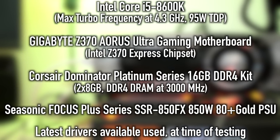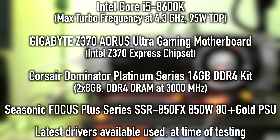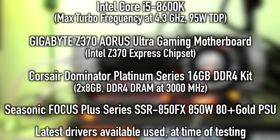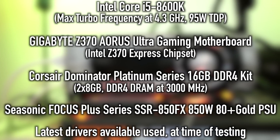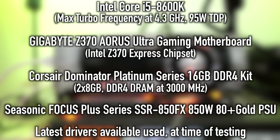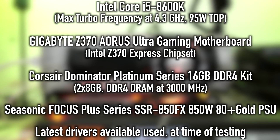With that said, let's check out the test system before we jump into those benchmarks. The test system used in today's video features an Intel Core i5-8600K with a maximum turbo frequency of 4.3 GHz and a 95-watt TDP. The motherboard is the Gigabyte Z370 Aorus Ultra Gaming featuring the Intel Z370 Express chipset. We're using 16 gigabytes of DDR4 — Corsair Dominator Platinum series, two 8-gigabyte sticks at 3,000 MHz. The power supply is the Seasonic Focus Plus SSR-850FX, an 850-watt 80 Plus Gold unit. As far as the OS goes, we used the latest patch of Windows 10, a beta driver for the 1070 Ti, and the latest driver available from AMD for the Vega cards. Let's rock on and check out those benchmarks.